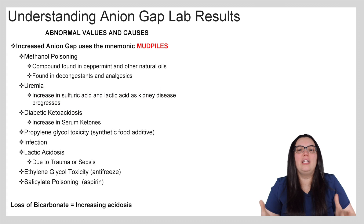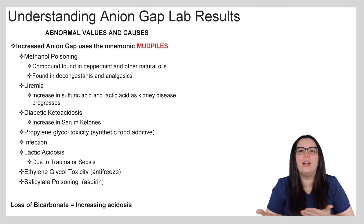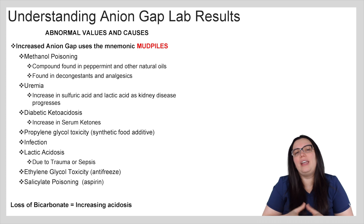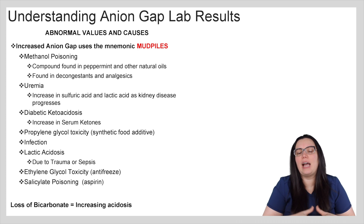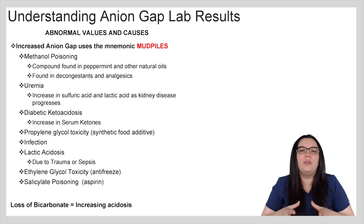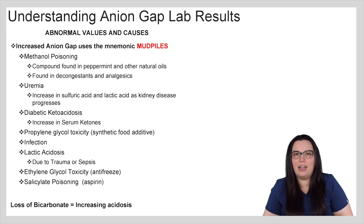So let's look at what happens when we have abnormal values and what the potential causes are behind that. We have an increased anion gap, and we use the following mnemonic: MUD PILES. MUD PILES represents the specific causes of an increased anion gap.